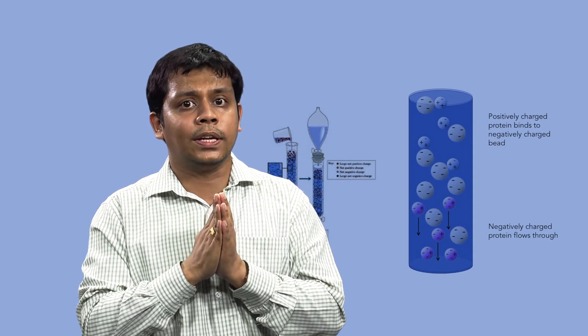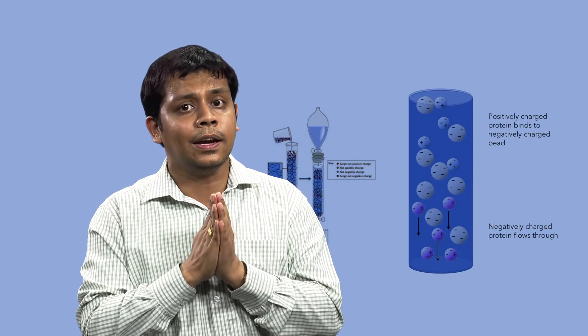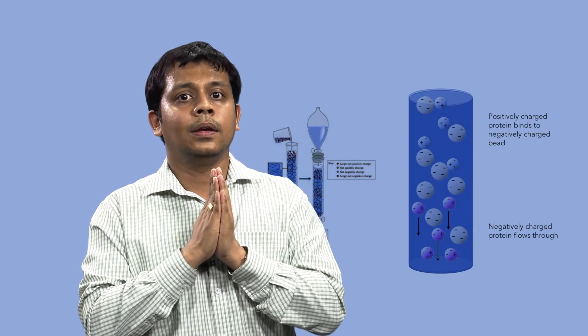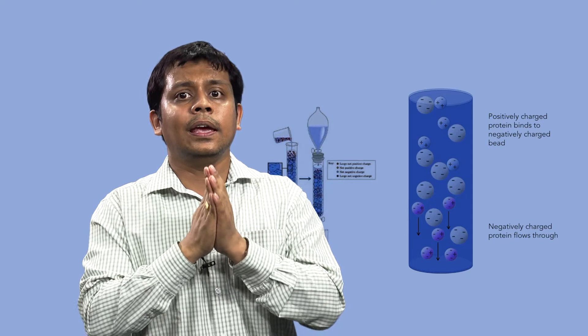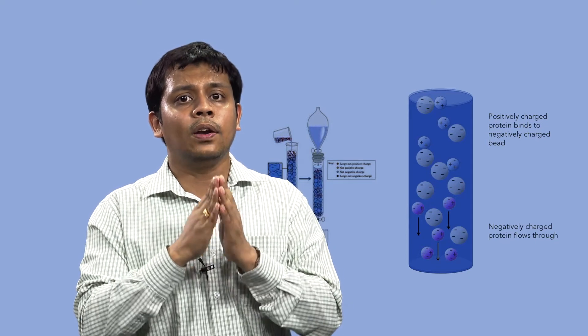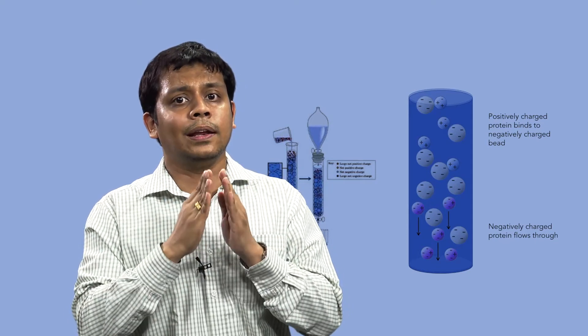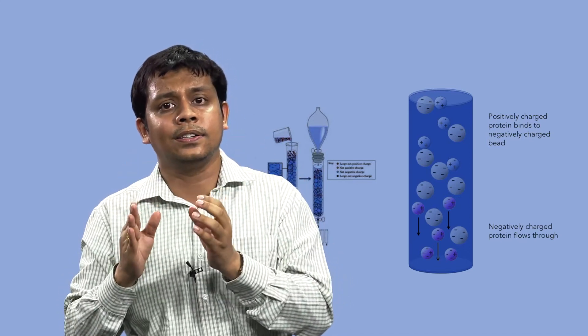The higher the net charge of the protein, the higher the ionic strength that is needed for elution. By controlling changes in the ionic strength using different forms of gradient, proteins are eluted differently in a purified concentrated form.